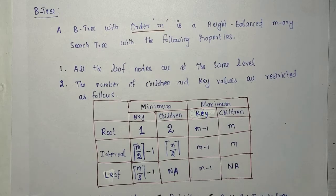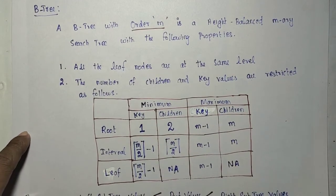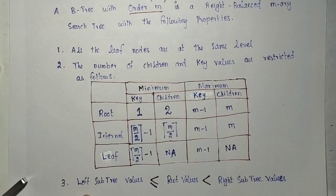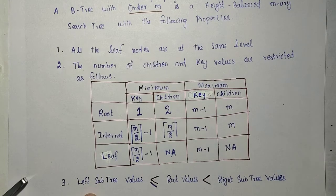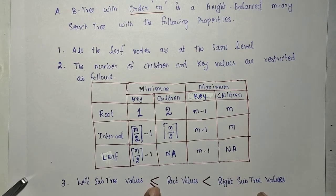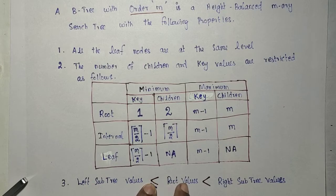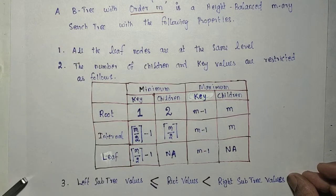The third property concerns key element ordering: left subtree values are less than or equal to root values, which are less than right subtree values. If duplicates are not allowed, left subtree values are strictly less than root values, and root values are strictly less than right subtree values. This is the basic search tree property.